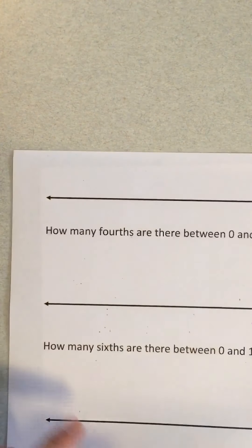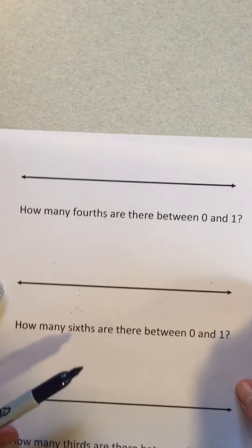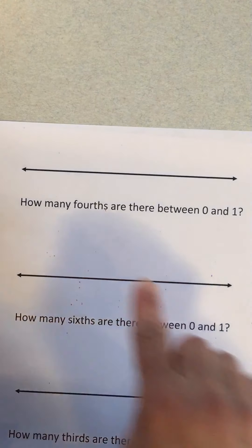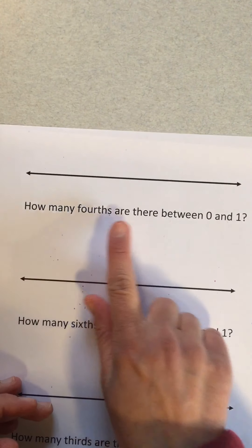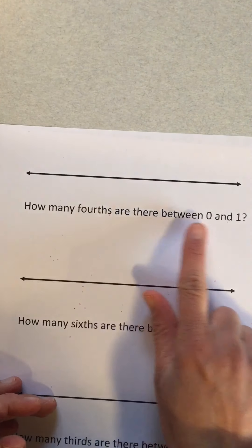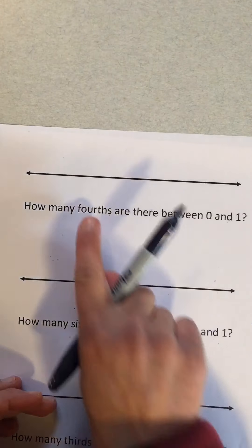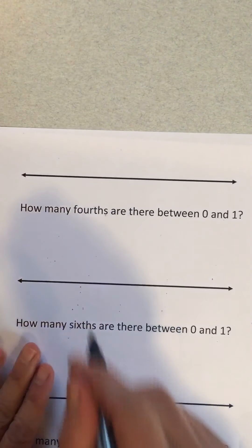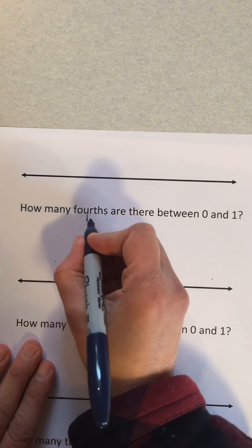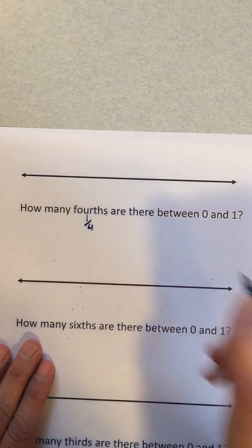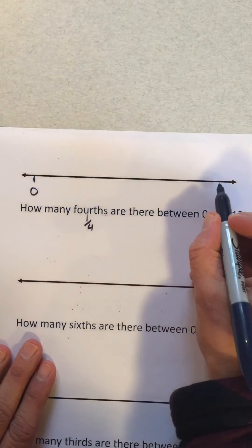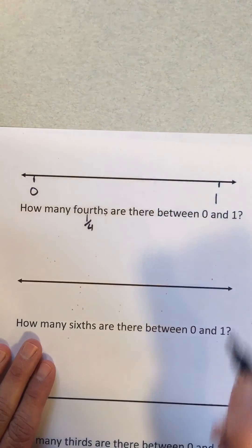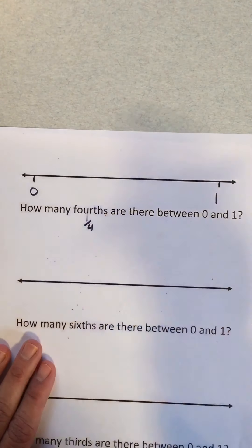Here's the question: how many fourths are there between zero and one? One over four. This is zero, this is one — you might know the answer already.